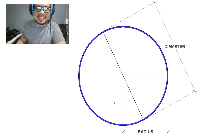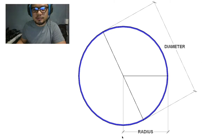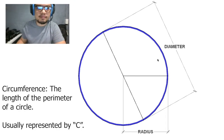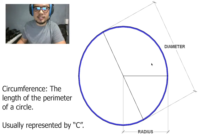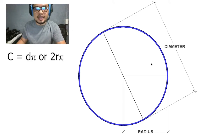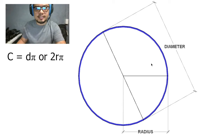So now let's get into the perimeter of the circle. The distance of the perimeter of the circle is what we know as the circumference. So if we were to take all those points and just line them all up into a flat line, that distance is what we call the circumference. To find the circumference, we use the equation diameter times pi, or we can also use the equation two times radius times pi.